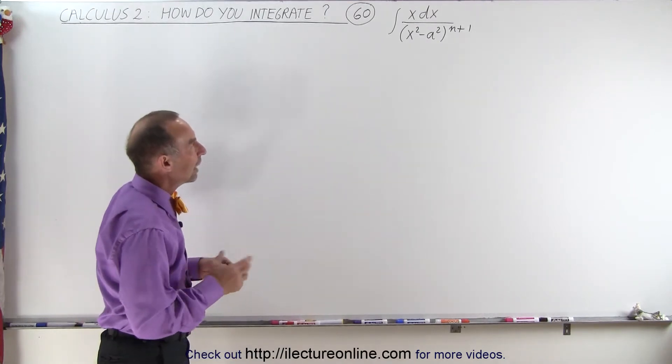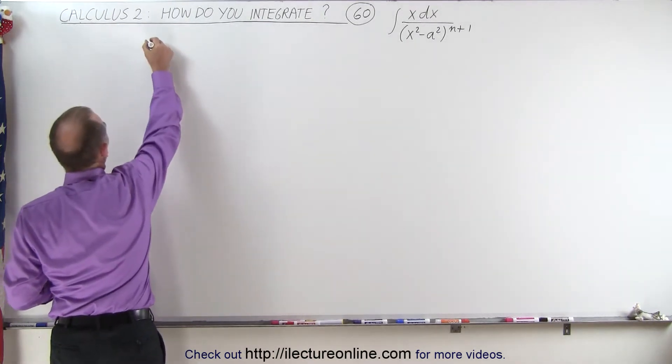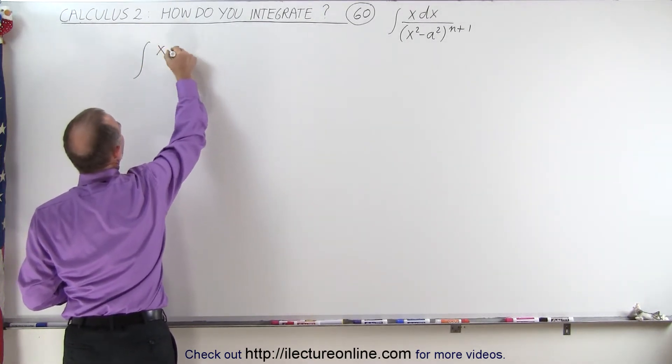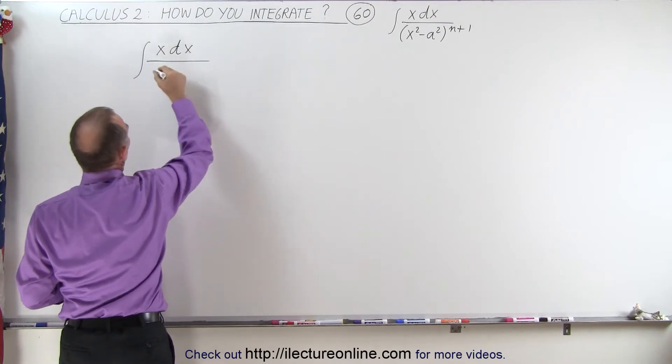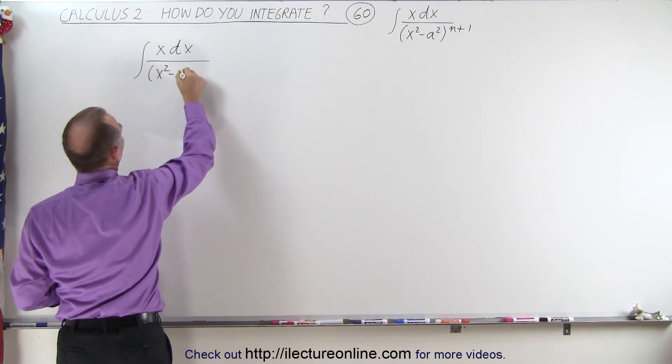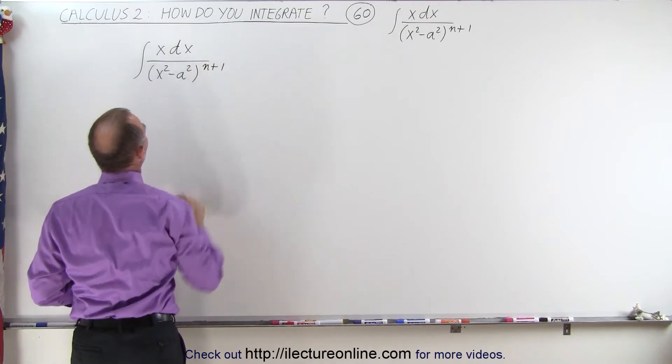What we have to do then is the following. So we start with the integral of x dx divided by the quantity x squared minus a squared to the n plus 1 power.